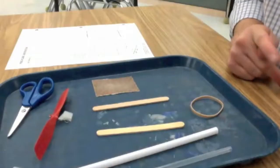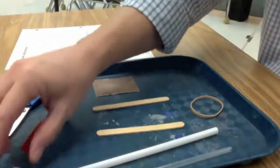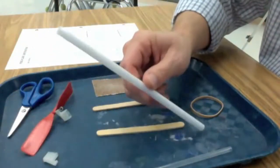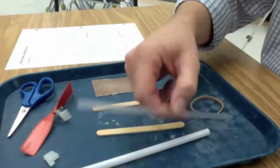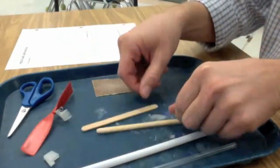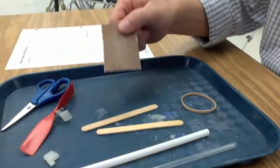To build your FOSS flyer you'll need a propeller, a tail hook, a jumbo straw, a regular straw, a rubber band, two popsicle sticks, pair of scissors, and some sandpaper.